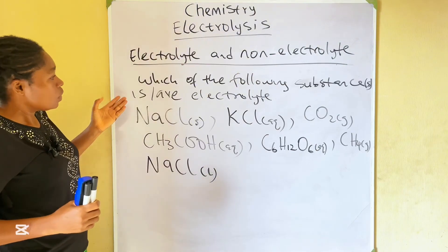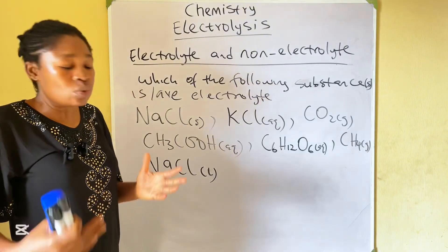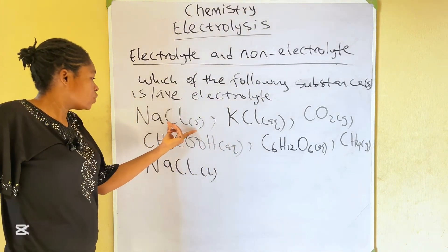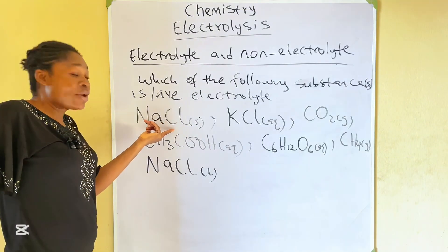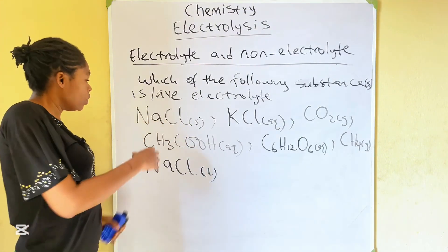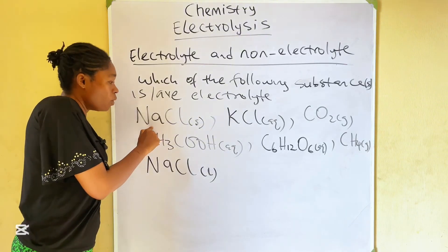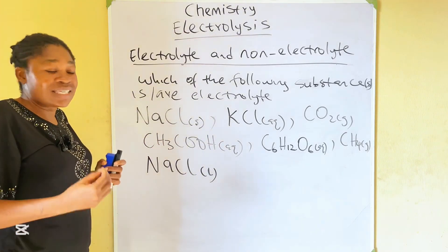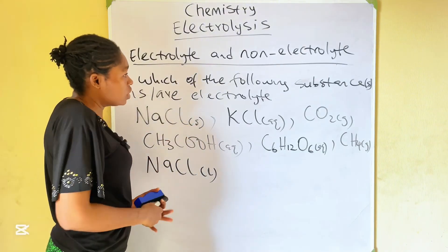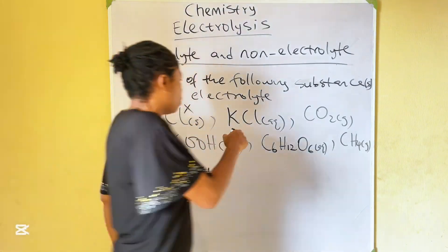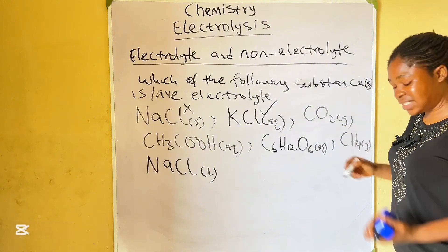One important thing about electrolytes: they conduct electricity when they are in molten form or in solution. For example, sodium chloride in solid state is not a good electrolyte — even though it is an ionic compound, the ions are not free and not mobile, so it cannot conduct electricity. But when you dissolve it in water or melt it, the ions become free to move — they become mobile. So sodium chloride in solid state is not an electrolyte.